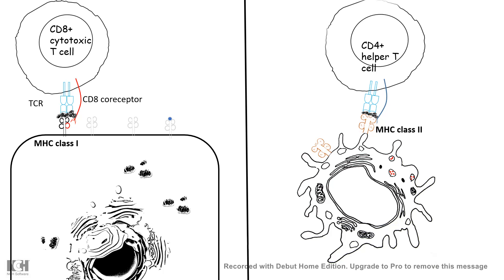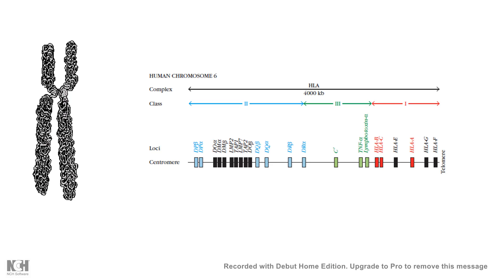That is the key difference by which MHC class 1 and class 2 molecules differentially present their peptides to different types of T cells. We have now seen the differences between MHC class 1 and class 2 at both a structural and a functional level.